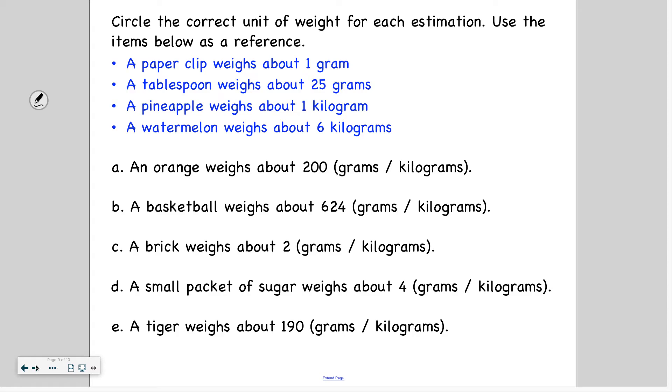So now this is where we're actually going to use our benchmarks. These approximate or estimate weights are benchmarks. I know that a paper clip weighs about 1 gram. A tablespoon weighs about 25 grams. A pineapple weighs about 1 kilogram. And a watermelon weighs about 6 kilograms. So these are benchmarks that I can use to help me determine the approximate weight or estimate the weight of these other objects that I have here.